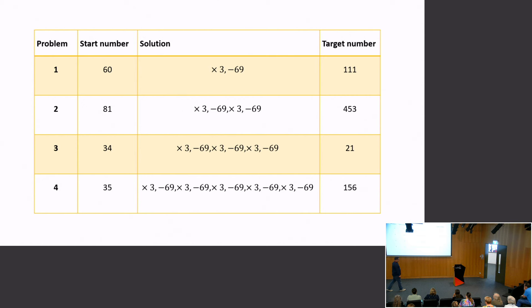Sweller started to think something funny was going on here, and he related it to what he knew about problem solving — a natural problem solving strategy called means-ends analysis. The way means-ends analysis works is: I know I want to be at the goal state, I know where I am now, so I try a move. If it doesn't get me close to the goal state, I try another. If one move gets me closer, I repeat the process from there. That's called means-ends analysis.